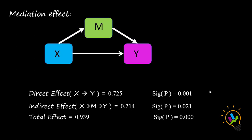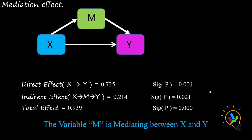The third observation is the total effect, which is 0.939 — also significant. So direct effect, indirect effect, and total effect are all significant. In the presence of the mediation variable, the direct effect is reduced to 0.725 because the indirect effect is 0.214. We can conclude that the M variable is mediating between X and Y, with a regression coefficient of 0.214 and a p-value of 0.021. This is the first example.